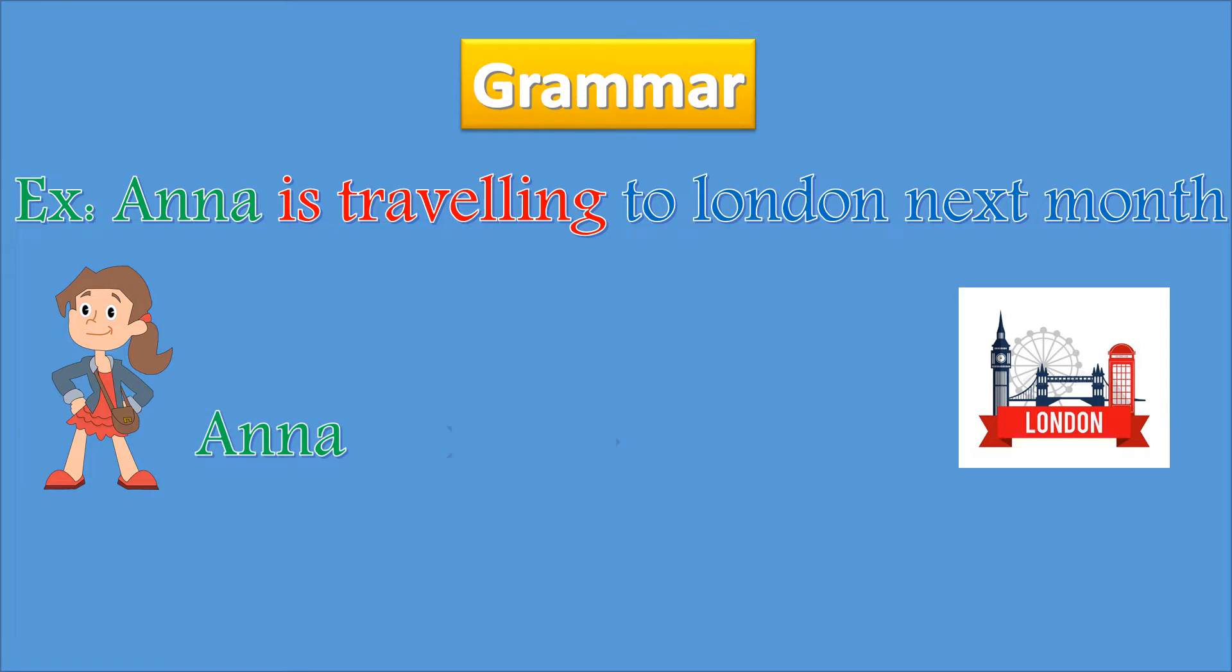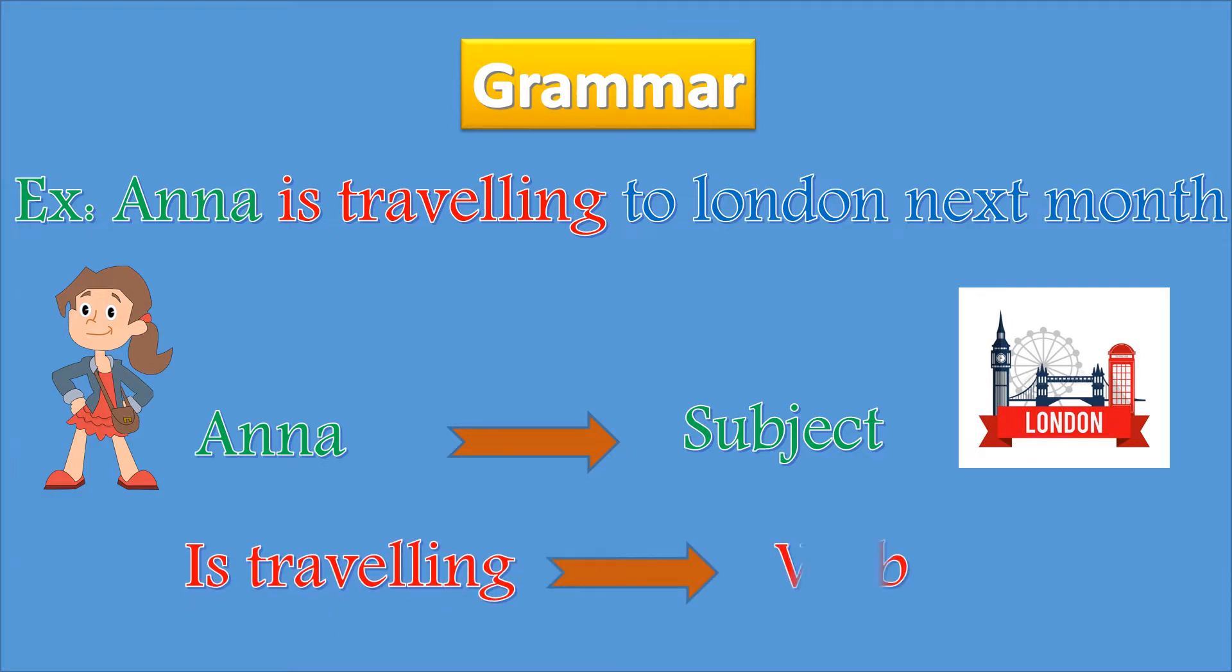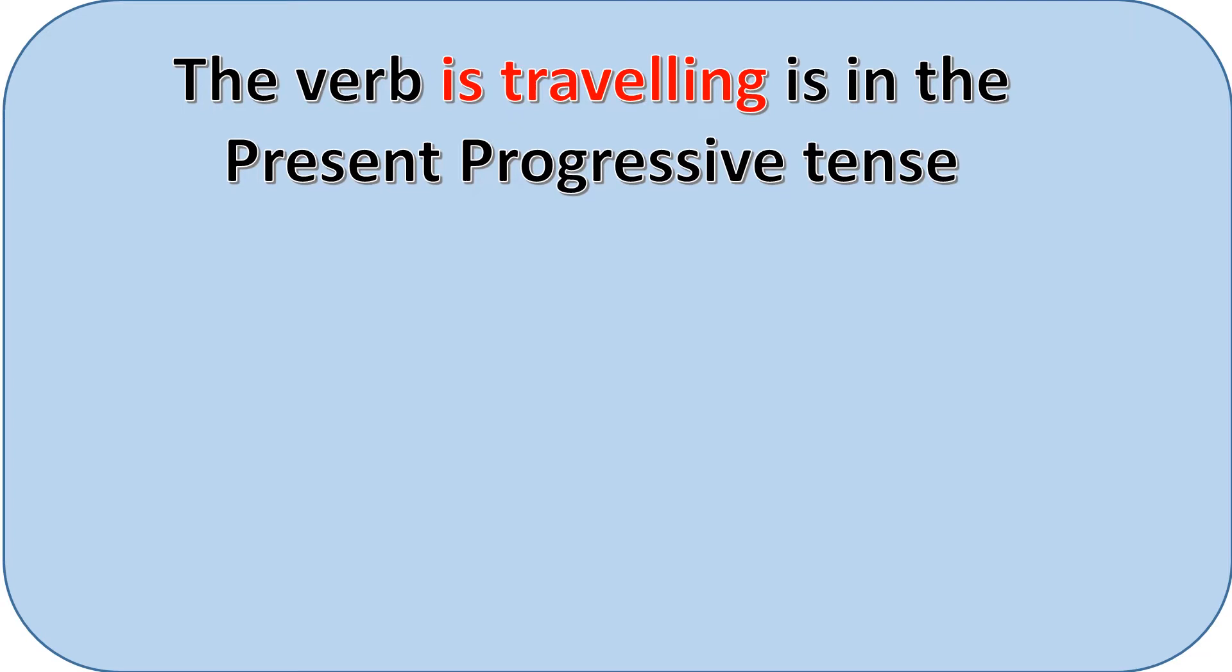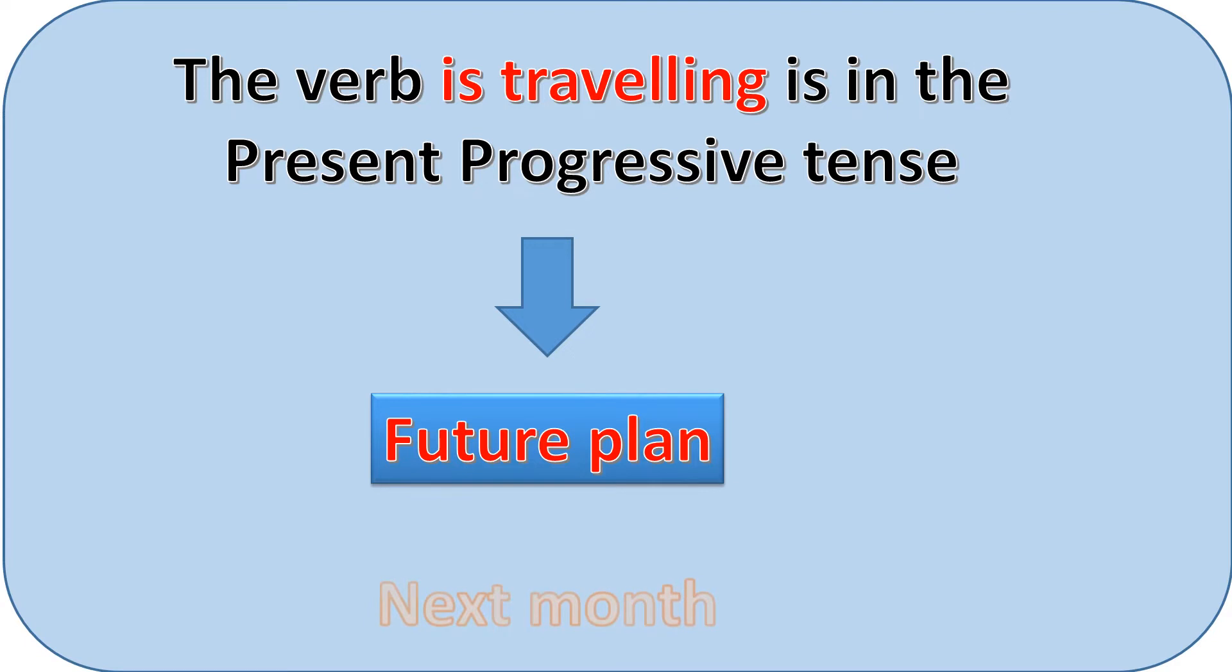In this sentence, Anna is the subject. Is traveling is the verb. The verb is traveling is in the present progressive tense, and it is used here to express a future plan because the action is going to occur in the future next month.